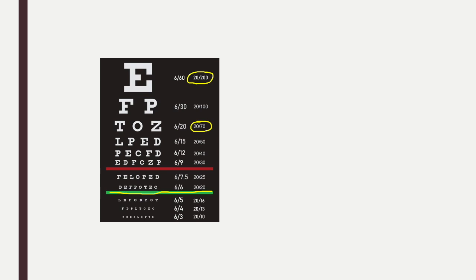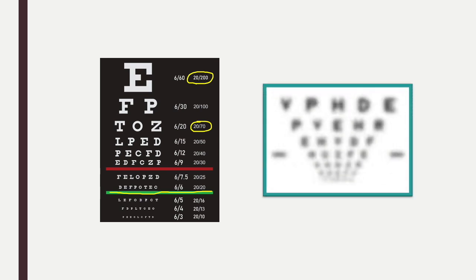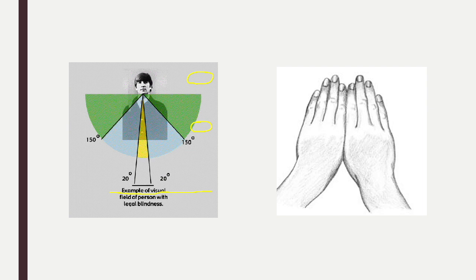Those who do not need glasses can see the small letters D-E-F-P-O-T-E-C without any glasses or eye surgery. A person who sees at 20/200 or less — this is how they would see the Snellen chart from 20 feet away during an eye test. The definition also mentions 20 degrees of vision — so what does that mean?